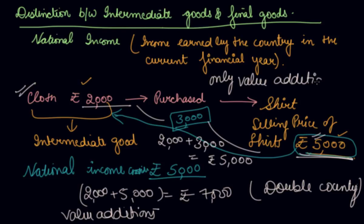So this is the main difference between your intermediate goods and the final goods while calculating national income. I hope you liked our video — please download our learning app and enjoy the learning experience with us.